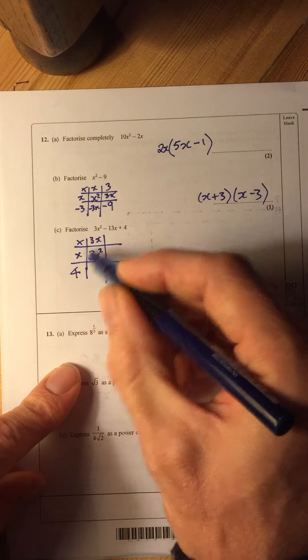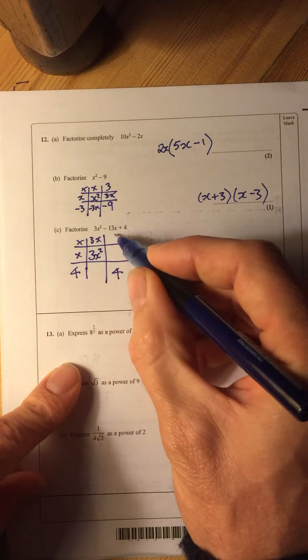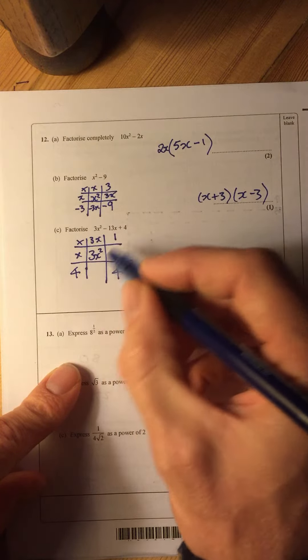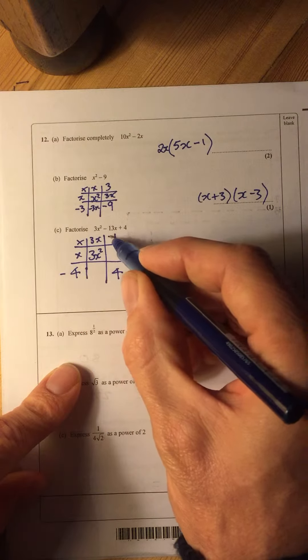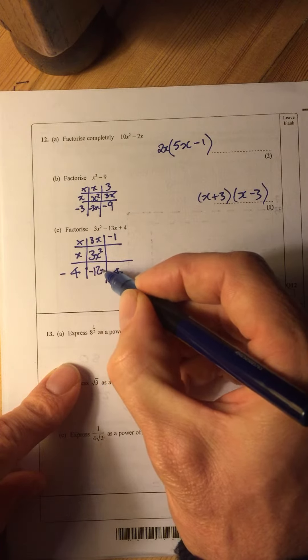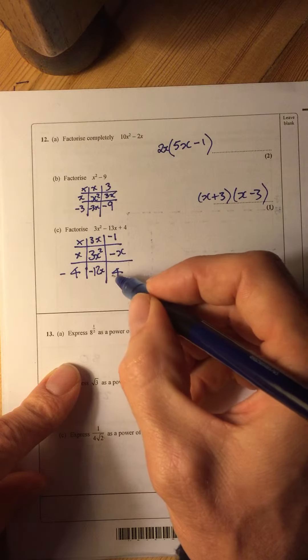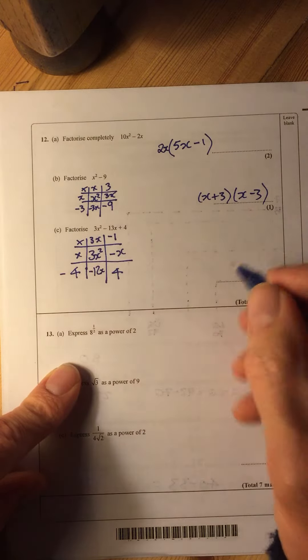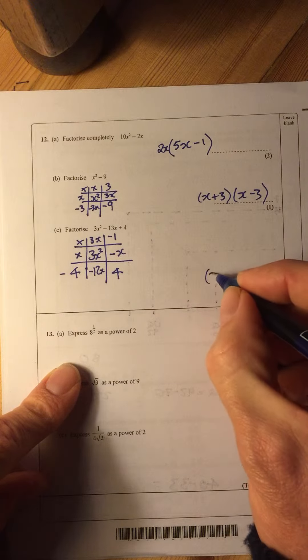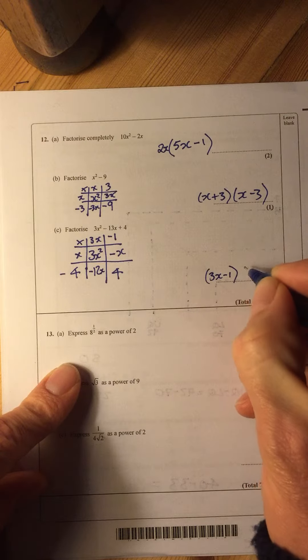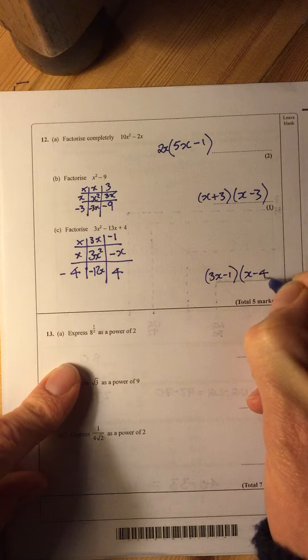4 times 3 to make the 12, and 1 to make the 13. But they've both got to be minus to make the minus 13. So that's minus 12x and minus x will give me my minus 13. That will give me positive 4. So my brackets are 3x minus 1 and x minus 4.